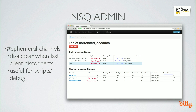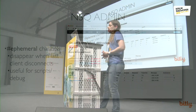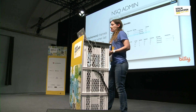A couple more tooling features. This image is of NSQ Admin, the final component of the whole NSQ architecture. NSQ Admin allows you to view aggregated cluster statistics in real time and perform various administrative tasks. It will show things like queue depths, how often messages are being requeued, and how fast clients are processing things. It also allows you to pause channels and topics. Lastly, NSQ has something called ephemeral channels — these are channels that disappear when your last client disconnects, and are useful for one-off scripts or inspecting a stream for debugging purposes.